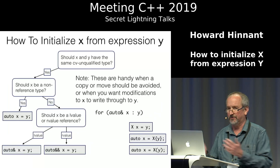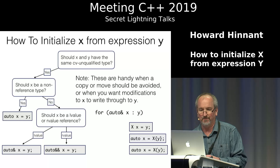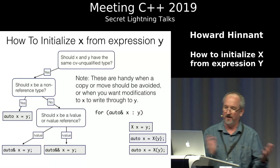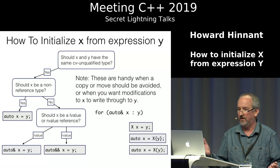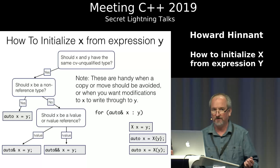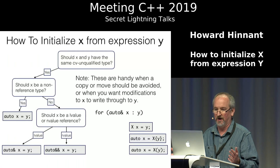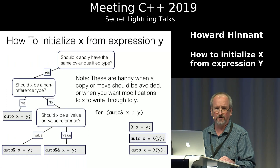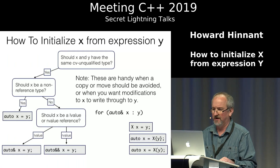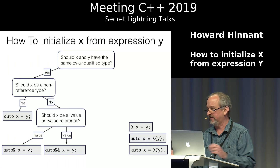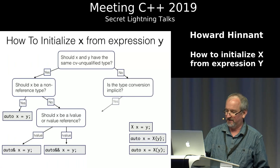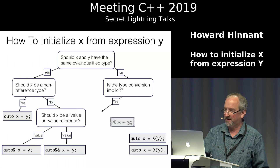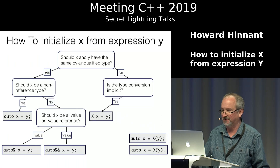If you do need to create a reference type: `auto& x = Y` for an lvalue reference, or `auto&& x = Y` for an rvalue reference. Those are great ways to do it, commonly used in for loops when you need to write through to each element in the loop. No big complication there; nothing should be surprising.